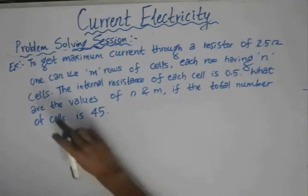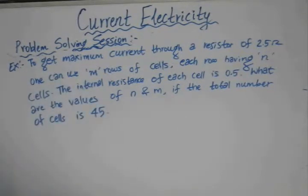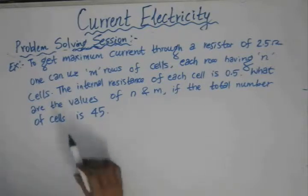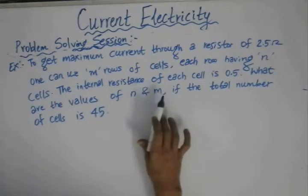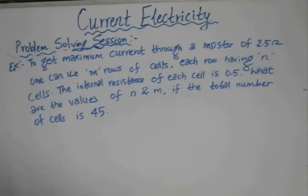In this problem, we have been given to get maximum current through a resistor of 2.5 Ohm. One can use M rows of cells, each row having N cells. The internal resistance of each cell is 0.5 Ohm. What are the values of N and M if the total number of cells is 45?